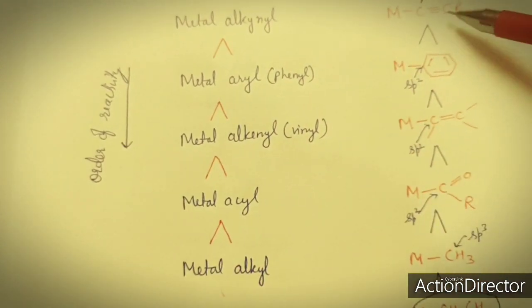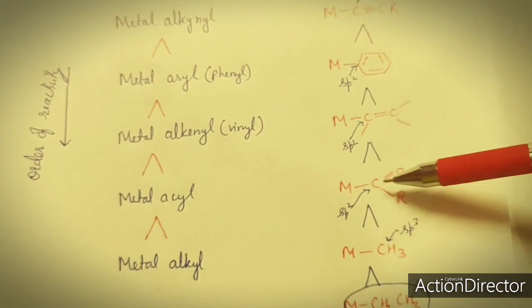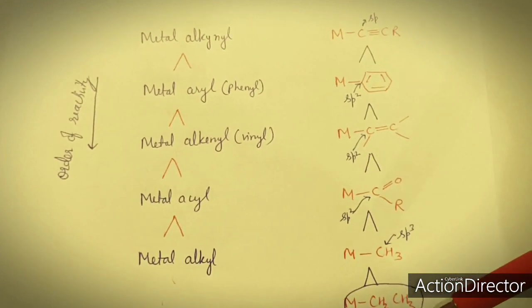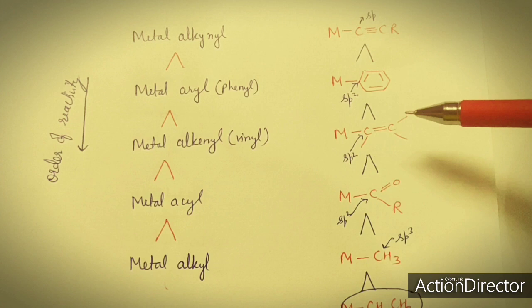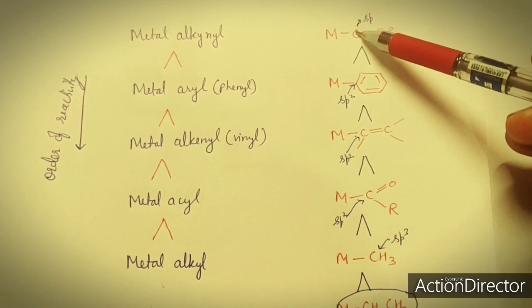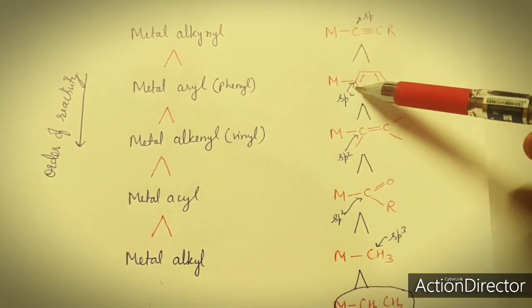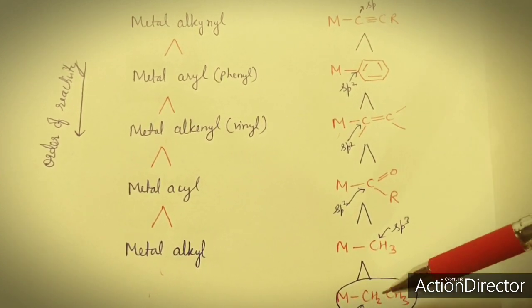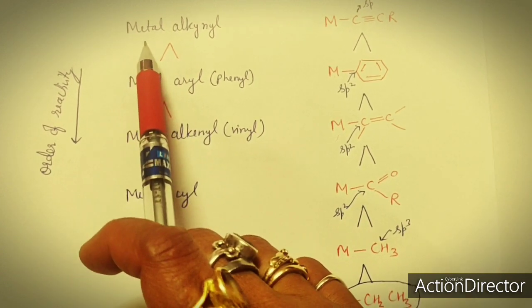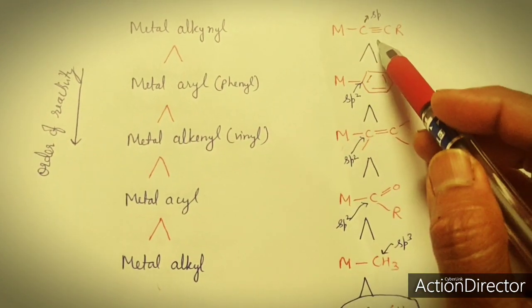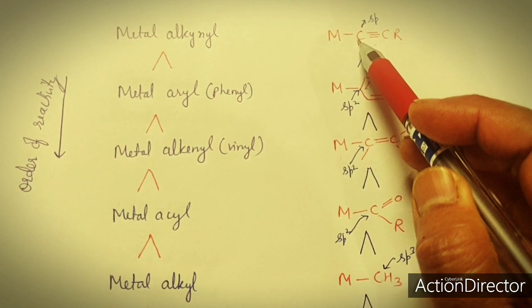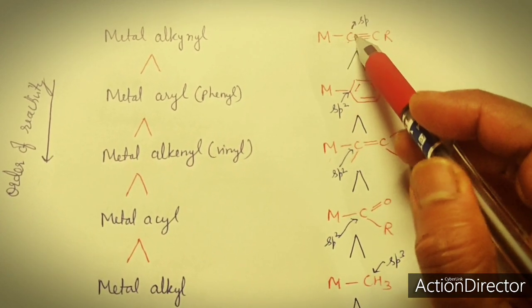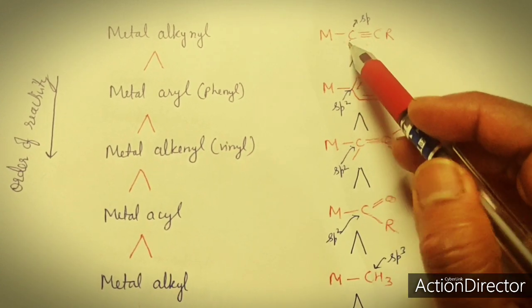Why does this order exist? These are sigma-bonded ligands. We have already classified transition metal organometallic compounds on the basis of ligands, where the carbon atom forms a sigma bond with the metal atom. However, the hybridization on that carbon atom may vary in each compound. In a metal alkynyl complex, there is a triple bond and the carbon is sp hybridized. As we know, sp hybridized carbon becomes electron-deficient and has the highest acidic character, meaning its electronegativity is highest.